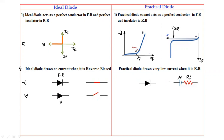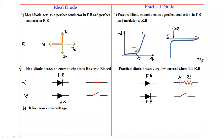In the reverse bias condition, the diode is replaced with the open switch. The ideal diode has zero cut-in voltage, as we discussed — it starts conducting from zero. The practical diode has a very low cut-in voltage: 0.7 volts for the silicon diode and 0.3 volts for the germanium diode.